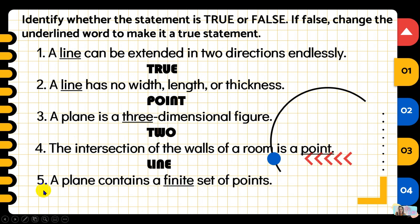Number five: a plane contains a finite set of points. The underlined word is 'finite.' Can the points in a plane be counted? The answer is false — we replace 'finite' with 'infinite.'